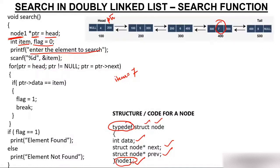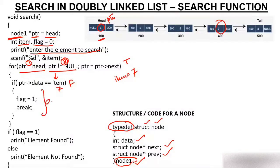Since you want to search, you start from the first node till the last. PTR is initialized with head. The condition is: while PTR is not equal to null. PTR is not null because PTR is at address 100, so the condition is true. You move inside and check: is PTR data equal to item? PTR data is 4, item is 7 — 4 is not equal to 7, condition is false. You update PTR: PTR gets PTR next, which is 200. PTR moves to address 200.